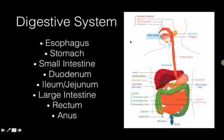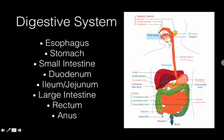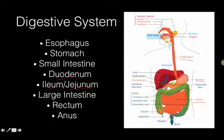The digestive system has a whole bunch of different hollow organs. Once food leaves the mouth, it continues through the esophagus into the stomach, then through the small intestine — which is made up of three parts: the duodenum, the ileum, and the jejunum. Then it goes into the large intestine, also called the colon, then to the rectum, and waste leaves the body through the anus.